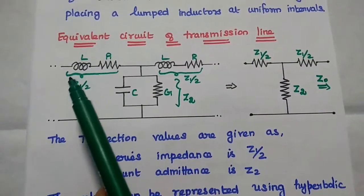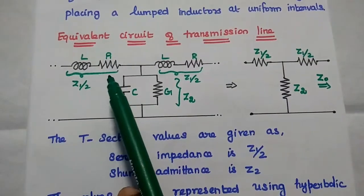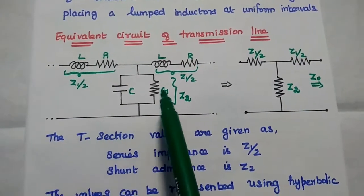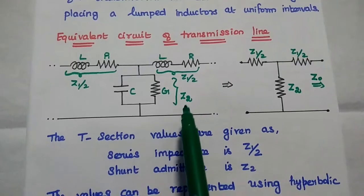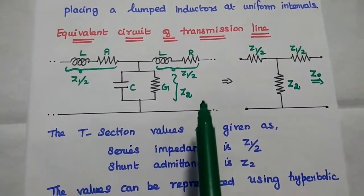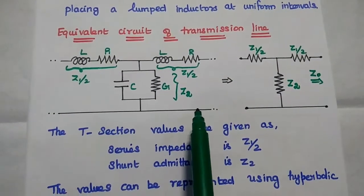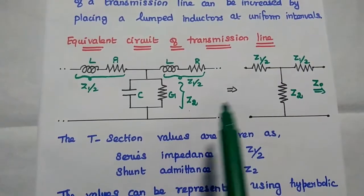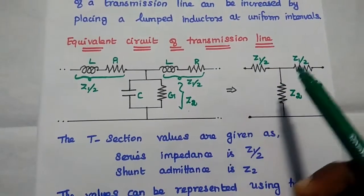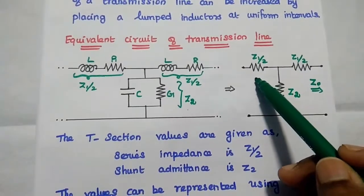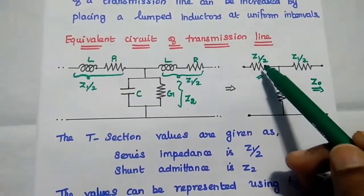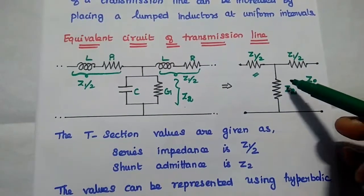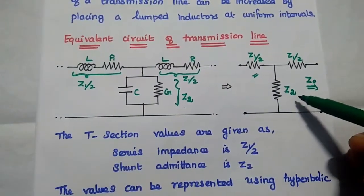The series impedance can be represented as Z1 by 2, and the shunt impedance can be represented as Z2. This is the simplified version of the equivalent circuit, where the series impedance is denoted as Z1 by 2 and the shunt impedance is denoted as Z2.